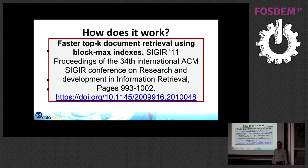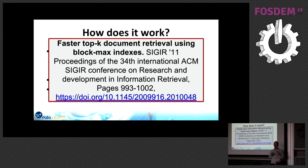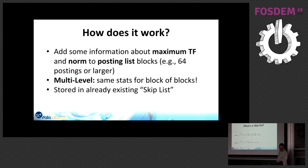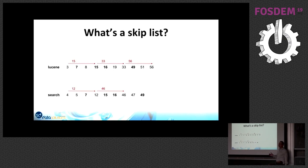The paper we implemented is from 2011: 'Faster Top-K Document Retrieval Using Block-Max Indexes.' The cool thing is those block-max indexes are very close to the skip lists in Lucene, so you can reuse a lot of code to implement that, which makes it much easier to include.